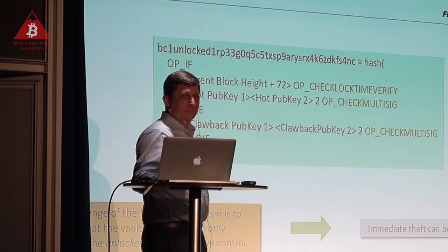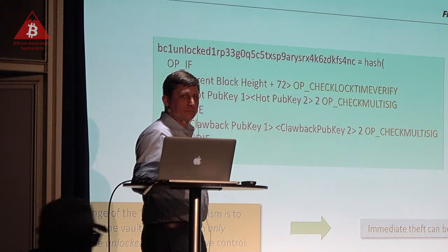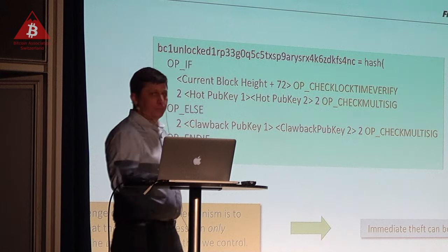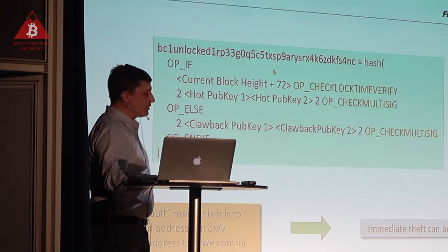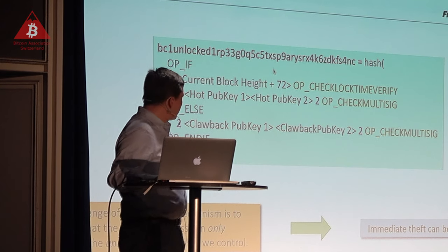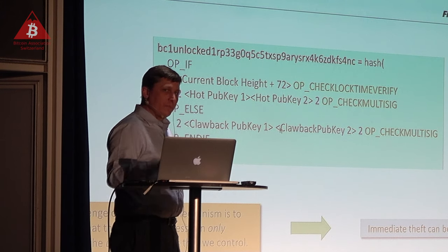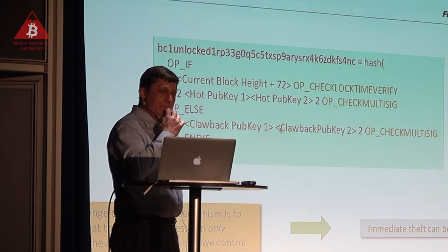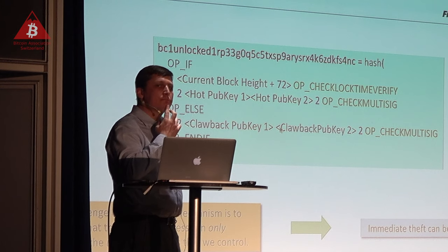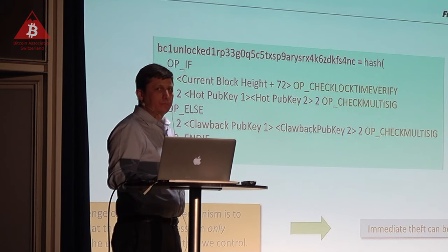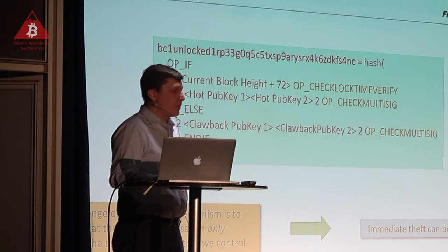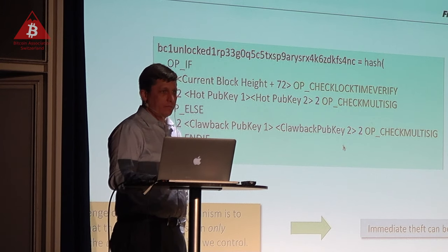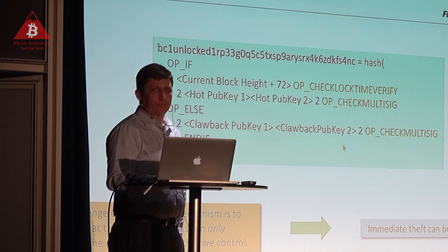Does it show on the blockchain, specifically on the key, if this mechanism is active? No — the only thing that appears on the blockchain is the address, which is the hash of the script. It's not until somebody attempts to spend this that they reveal the whole script. So by spending it, a hacker recognizes they have to wait 72 blocks. I'm going to talk about Taproot in a few slides — it is a fact that everyone would see that your sends are time-locked, even with Taproot.